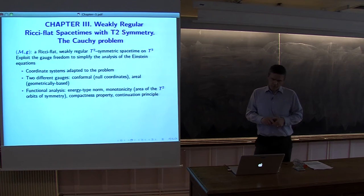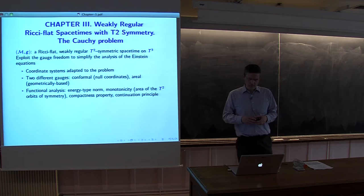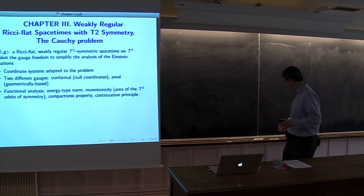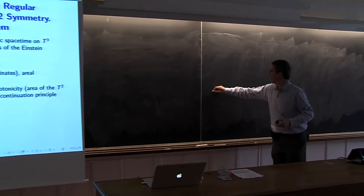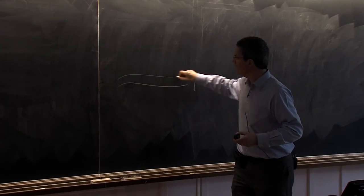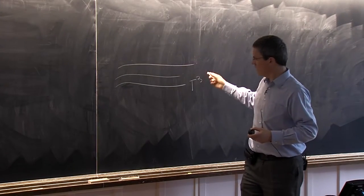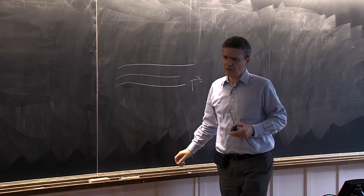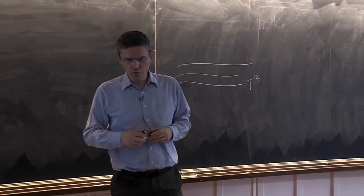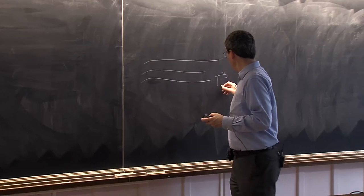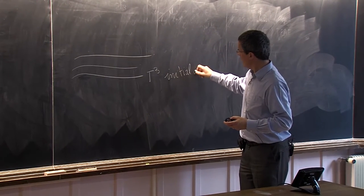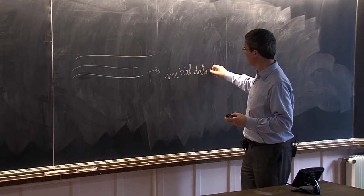We begin with a Ricci flat weakly regular T2 symmetric spacetime. The topology is T3, so we are constructing a spacetime where each slice of the foliation will have the topology of T3. And what we have to do now, if we want to solve the Cauchy problem, is to have some initial dataset prescribed on one of these hypersurfaces.